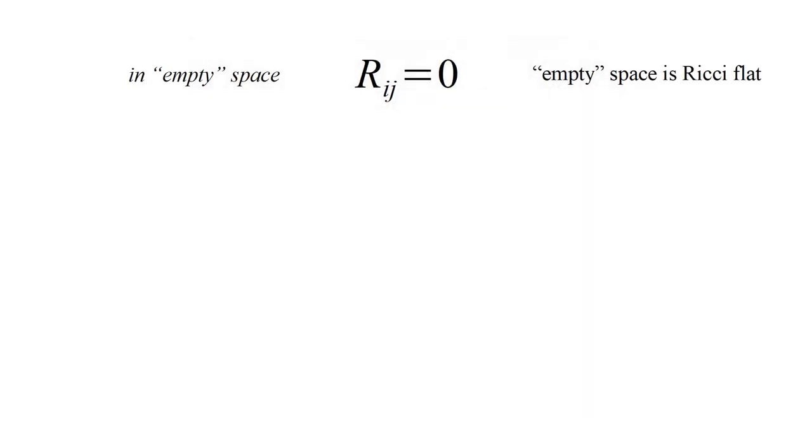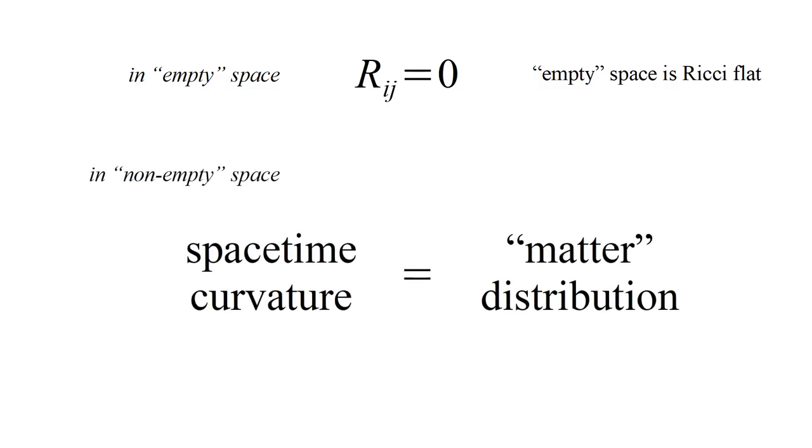In empty space, each of the sixteen components of the Ricci tensor are zero. Empty space can be curved, but its curvature is constrained by this equation. In non-empty space, presumably the modified equation will relate spacetime curvature to the distribution of matter. By matter, we mean all non-gravitational forms of energy.